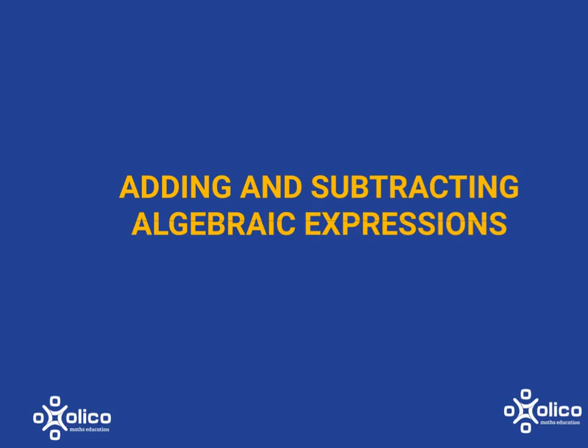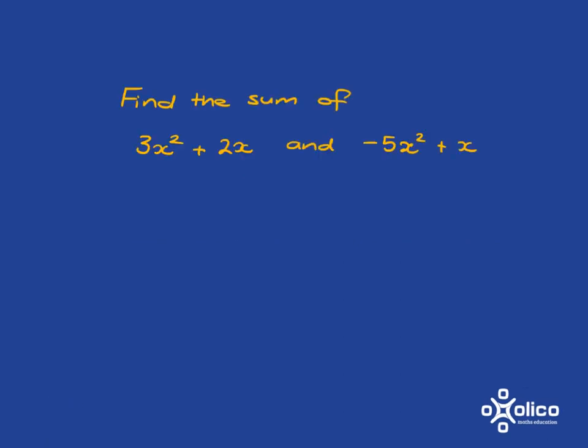We're going to do two quick examples involving adding and subtracting algebraic expressions. If you're asked to find the sum of 3x² + 2x and -5x² + x, you must remember that when you're asked to find the sum of two things, you're being asked to add them together.